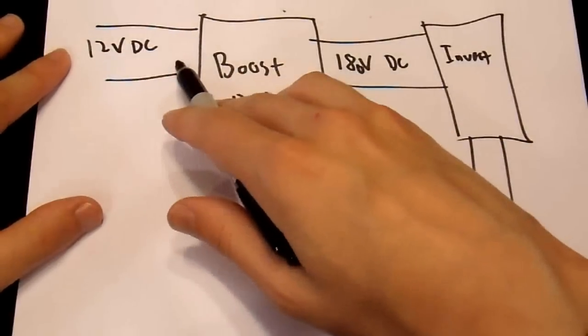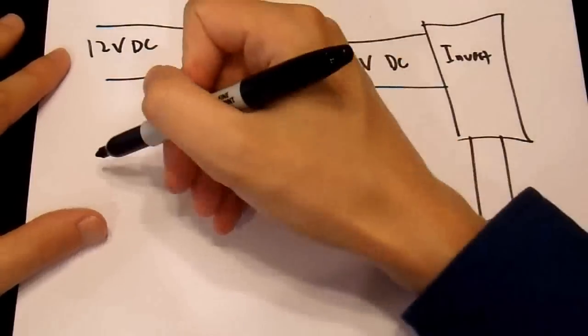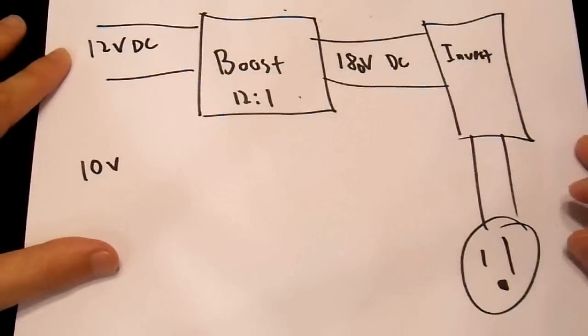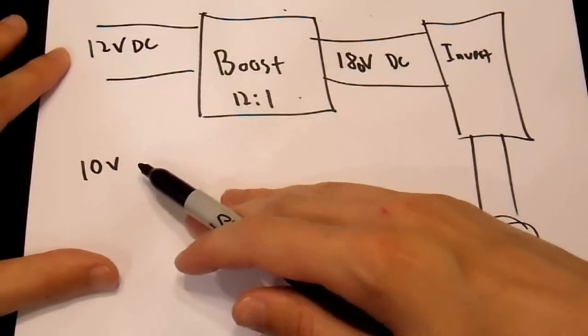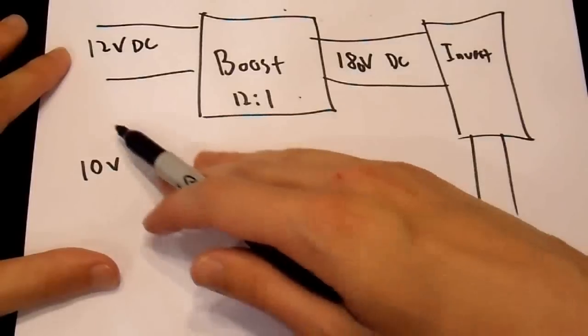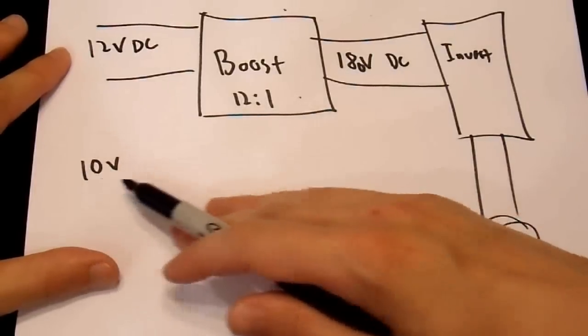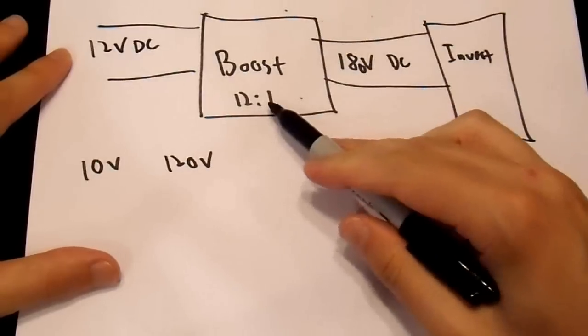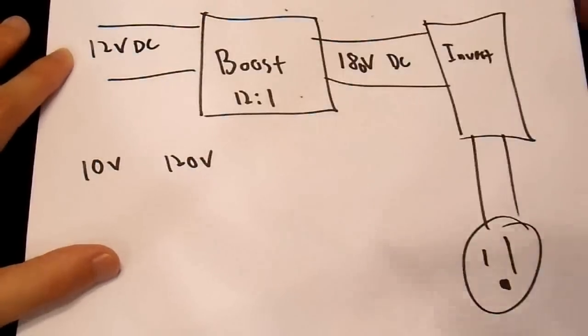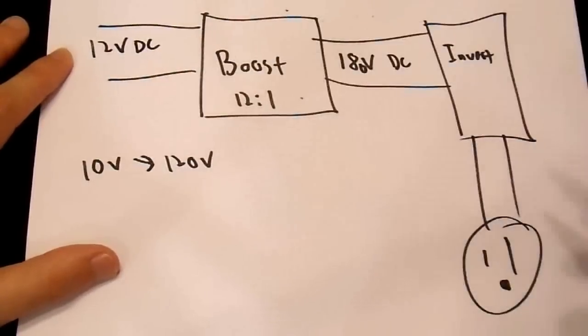So if you get 10 volts input, that means that you're either drawing a heavy load out of your battery, and your battery voltage is drooping, or your battery is almost fully discharged, so it's down at 10 volts. It boosts it up to 120 volts, because it's a 12 to 1 boost. So we'll go from 10 volts to 120 volts.